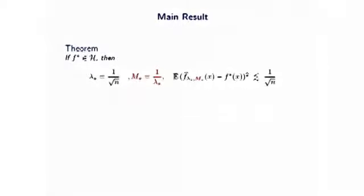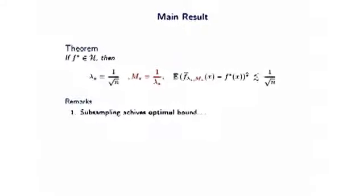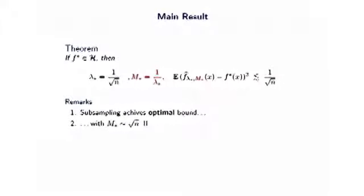This is our theorem. As you can see, it is very similar to the theorem for kernel ridge regression — the bound is the same and the condition on lambda is the same. We added a condition on the number of centers. This is a proof that subsampling achieves optimal bounds, which is a new result. Moreover, it achieves optimal bounds with a number of centers of only order square root of N, compared to N centers needed for kernel ridge regression. You are not paying any statistical price for efficient computations.